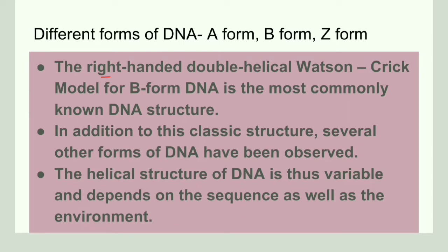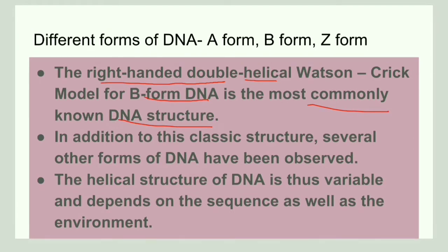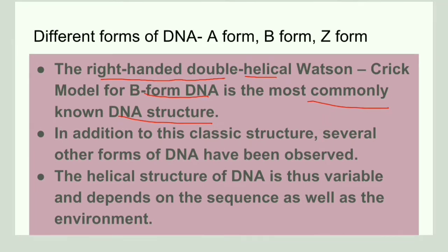B-form DNA is a right-handed double helical structure and this is the most commonly known, or classical, DNA structure. Apart from the classical structure, there are different forms of DNA: DNA-A, DNA-Z, and DNA-E.